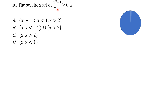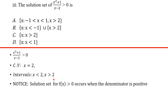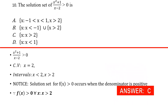For (x² + 1) / (x − 2) > 0: the numerator x² + 1 is always positive, so the sign of the expression depends entirely on the denominator. The critical value is x = 2. For the expression to be greater than zero, the denominator must be positive, which means x > 2. So the solution set is x > 2, and our answer is C.